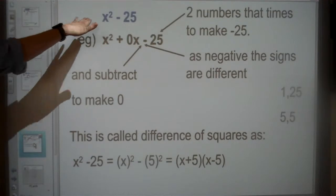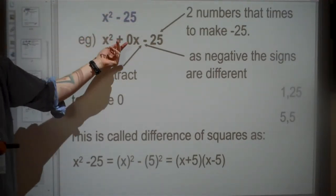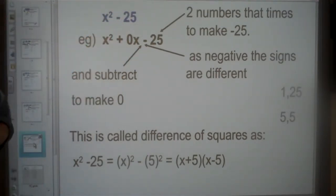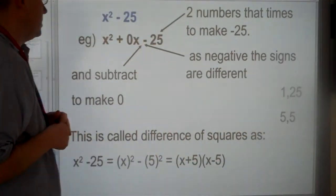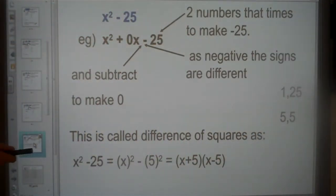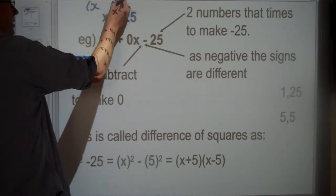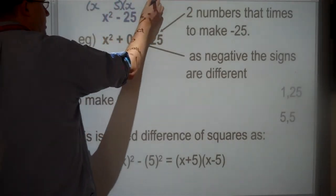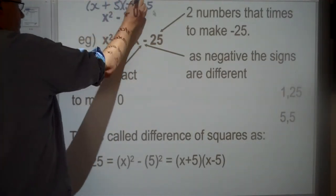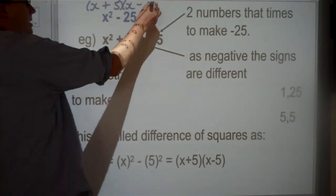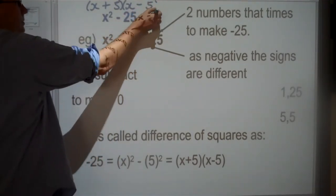If I get something with only two terms, like a binomial, you can still answer this question if you insert 0x into the middle. So I need two numbers that times to make 25, and they're going to subtract to make 0. I don't have much choice - 1 and 25, or 5 and 5. 5 take away 5 is 0, so I know it's going to be x and 5, x and 5. I know straight away the signs are different. As these are the same number, it doesn't really matter which one I put first. So x + 5, x - 5.